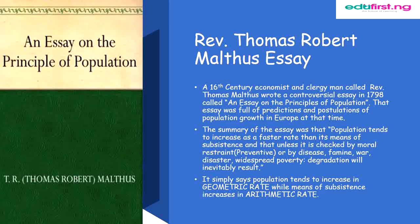The summary of the essay was that population tends to increase at a faster rate than its means of subsistence, and that unless it is checked by moral restraint — which is preventive — or by disease, famine, war, disaster, or widespread poverty, degradation will inevitably result. Simply put, population tends to increase in geometric rate while means of subsistence increases in arithmetic rate.